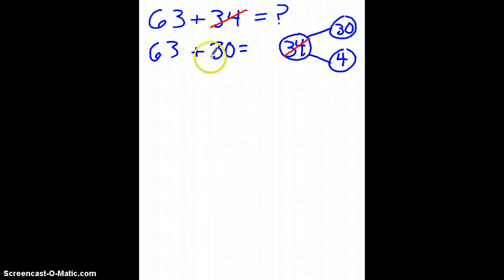Now, all I need to do is add 30 to 63. 30 has 3 tens, and I add that to the 6 tens in 63. 3 plus 6 is 9. Adding 3 ones plus zero ones is simple. That's 3.